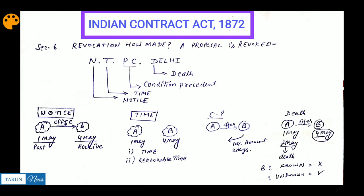Hello everyone, in this video we are going to discuss the Indian Contract Act 1872, Section 6: Revocation - How Made. In the last video we discussed Section 5, which talks about the revocation time period for acceptance as well as for the proposal. In this video, we'll discuss the next step, Section 6: how the revocation is made in case of a proposal.